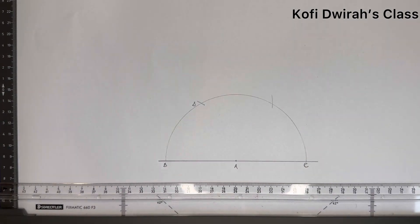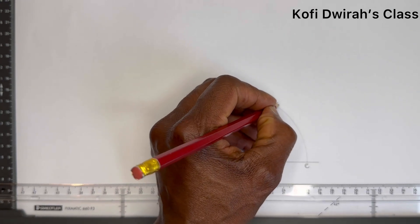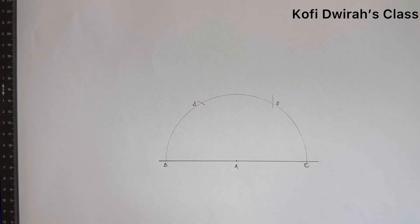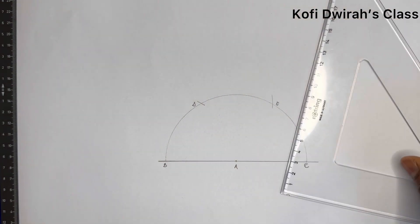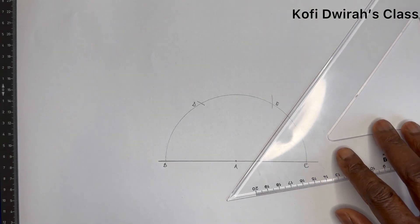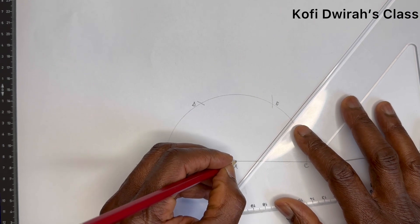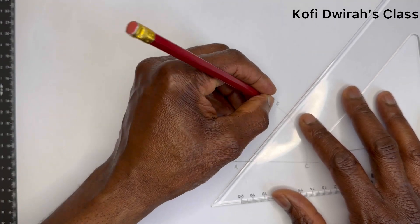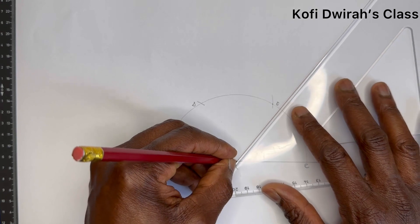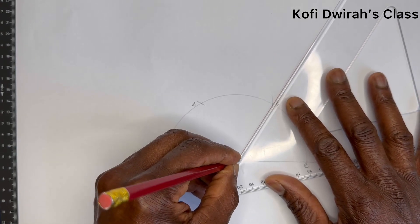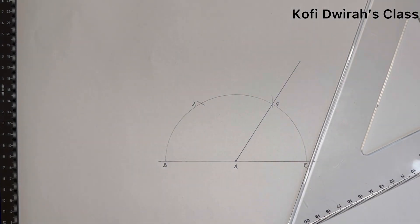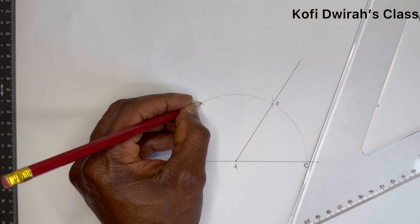This gives us point E. At point A, draw a straight line through point E. Then at the same point A, draw another straight line through point D.